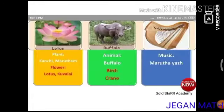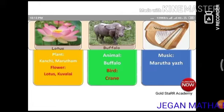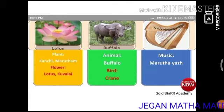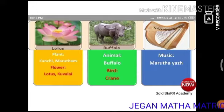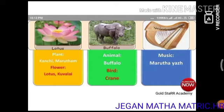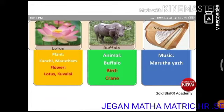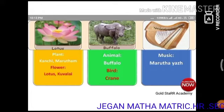The next theme deals with the God, people, occupation, plant, flower, animal, bird, and musical instrument.